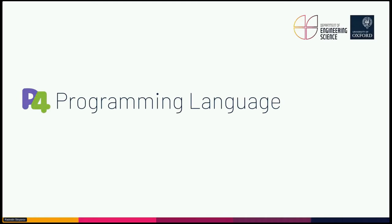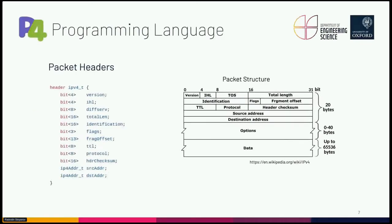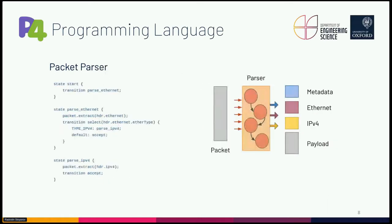For this abstraction model we use a domain-specific programming language called P4 — an acronym for Programming Protocol-Independent Packet Processors. To declare packet headers, P4 provides a construct called header, similar to a C structure, which specifies a set of headers usable by a programmable parser. A parser is a finite state machine consisting of a set of states and transitions. The initial state is called start and the final state is either accept or reject. In addition to extracting packet headers, the parser can also set metadata associated with the packet.